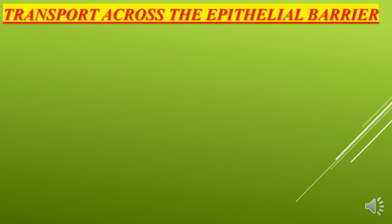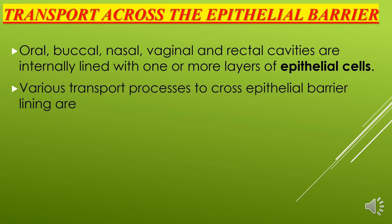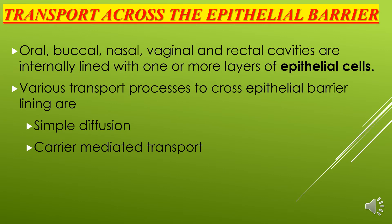Transport across the epithelial barrier: Oral, buccal, nasal, vaginal, and rectal cavities are internally lined with one or more layers of epithelial cells. Various transport processes to cross the epithelial barrier lining are: first, simple diffusion — molecules move from high to low concentration without need of energy; second, carrier-mediated transport — molecules move from high to low concentration but with the help of transport proteins; third, endocytosis, which we have already discussed in detail.